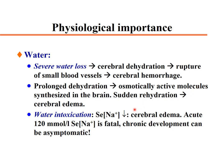When water intoxication develops gradually, the brain can lose active intracellular molecules, and dehydration can cause neuronal problems. If water intoxication develops chronically, the patient may be relatively asymptomatic or may have increased blood pressure.